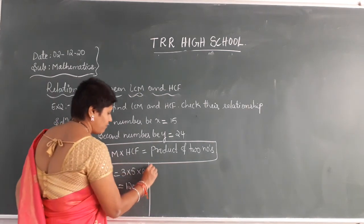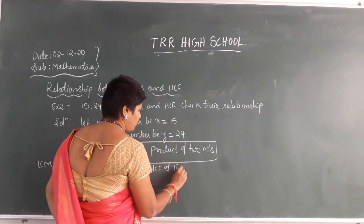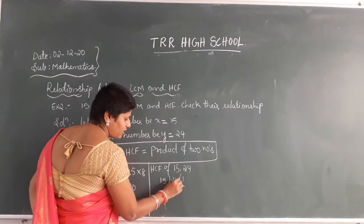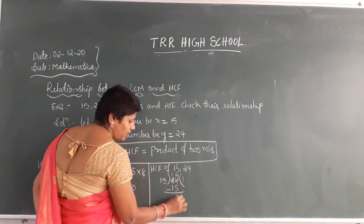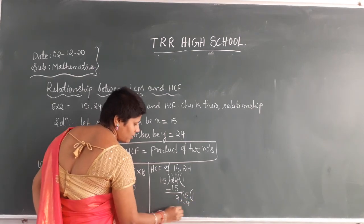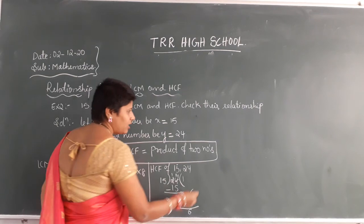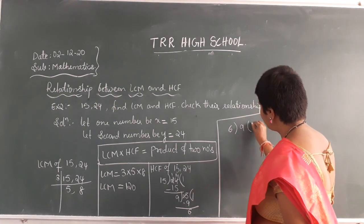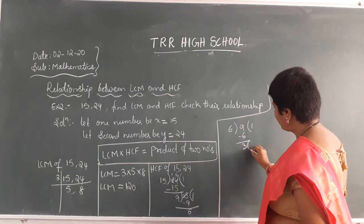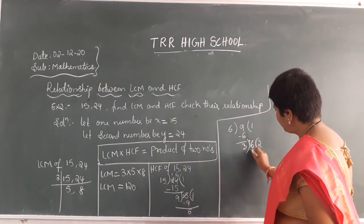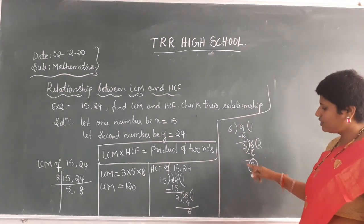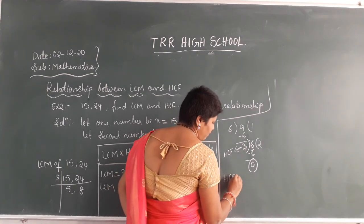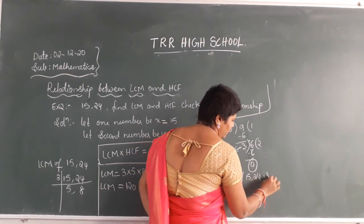Now find the HCM of 15 and 44 using the continuous division method. 15 ones are 15. 44 minus 15 gives... subtract: 44 minus 15 is 29. Then 15 goes into 29 once: 15 ones are 15. 29 minus 15 gives 14. Again 14: 14 goes into 15 once, 15 minus 14 gives 1. Then 14 goes into... so continuing the process: 6 goes into 6 once, remainder 0. So HCM of 15 and 44 is 3.